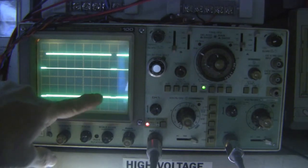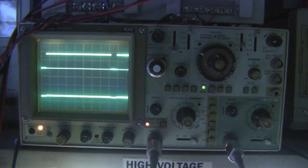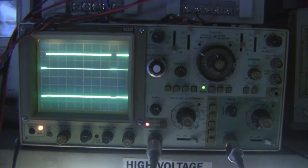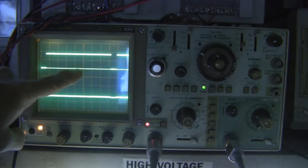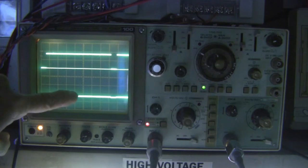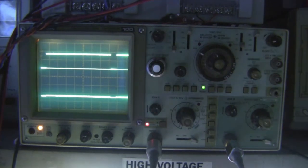Let me change the coupling on channel two to AC so that we can look at this signal after it has been coupled over the capacitor and sent to grid one. Pardon the glare.